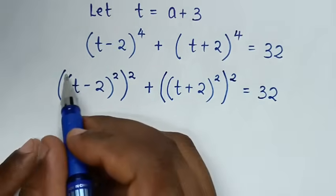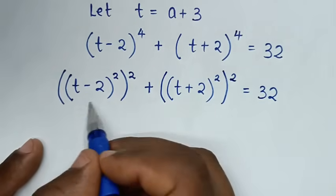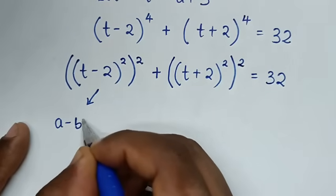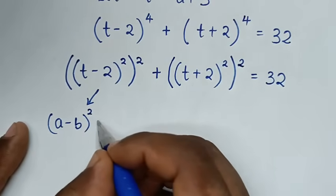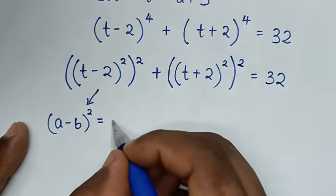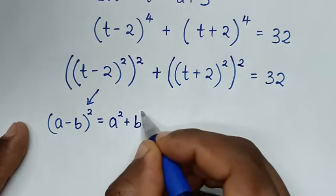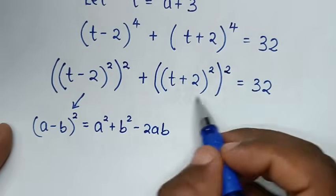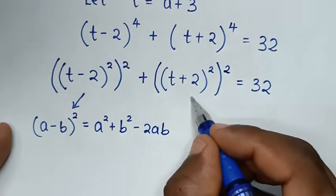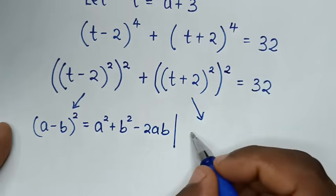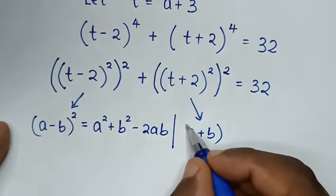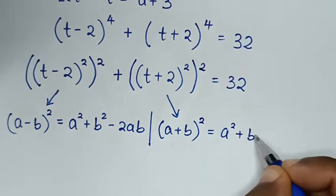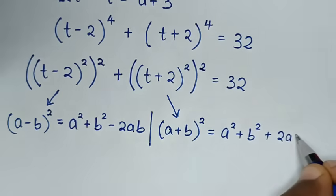From this, (t − 2)² is in the form of the rule (a − b)² = a² + b² − 2ab. And (t + 2)² is in the form of the rule (a + b)² = a² + b² + 2ab.